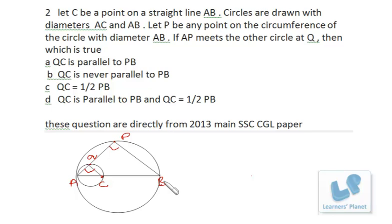If the corresponding angles are equal, lines are parallel. This is 90, this is 90, that's why PB is parallel to QC. So that's definitely correct. Apart from that, QC is half of PB, that is this fourth option.